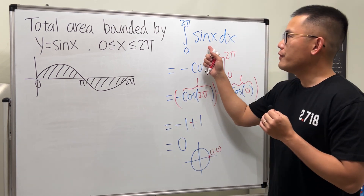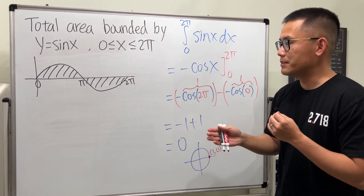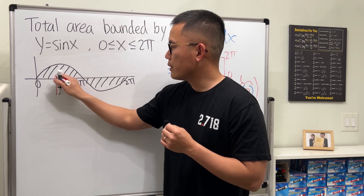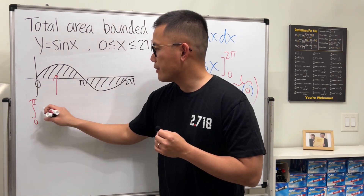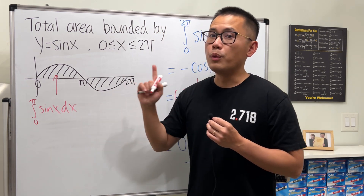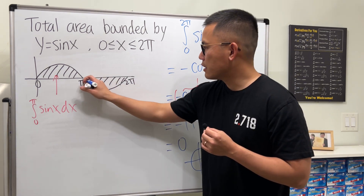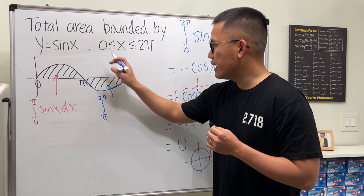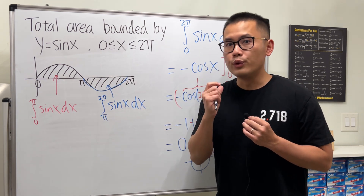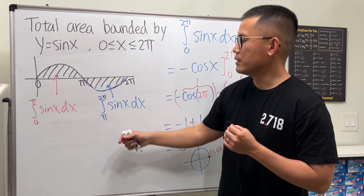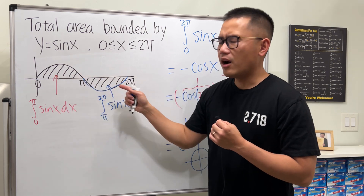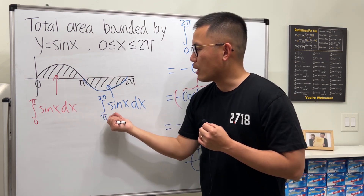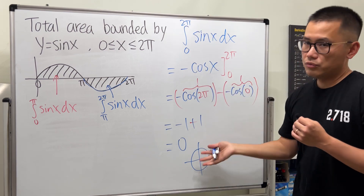Area is never negative, but for integrals it can be negative or even zero. If the curve is above the x-axis, integrating from zero to pi of sin(x) gives a positive result. But from pi to 2π the curve is below the x-axis, so that integral gives a negative result — because y-values are negative. These two regions are the same size but opposite in sign, so they cancel and you get zero.